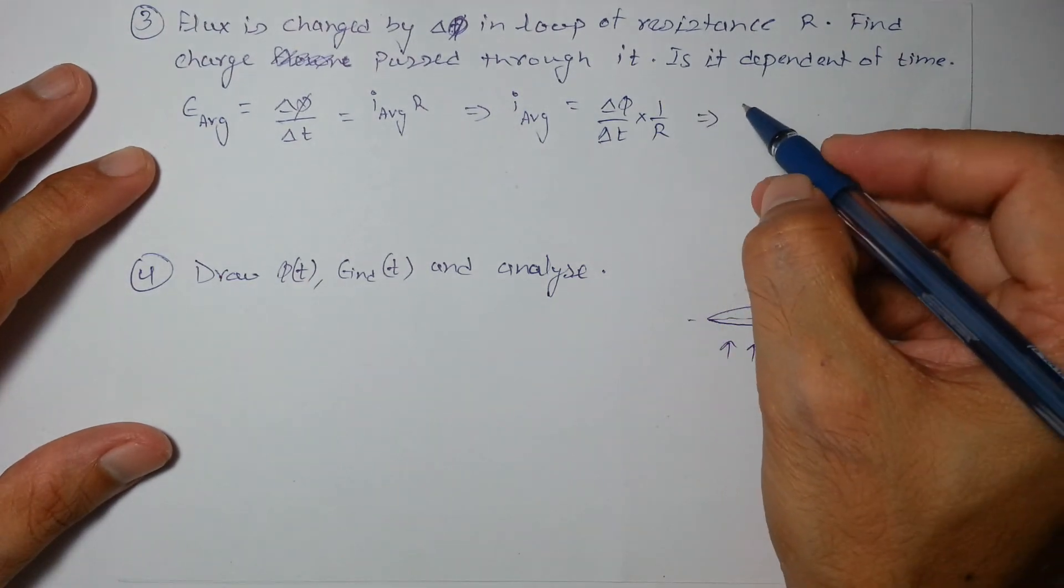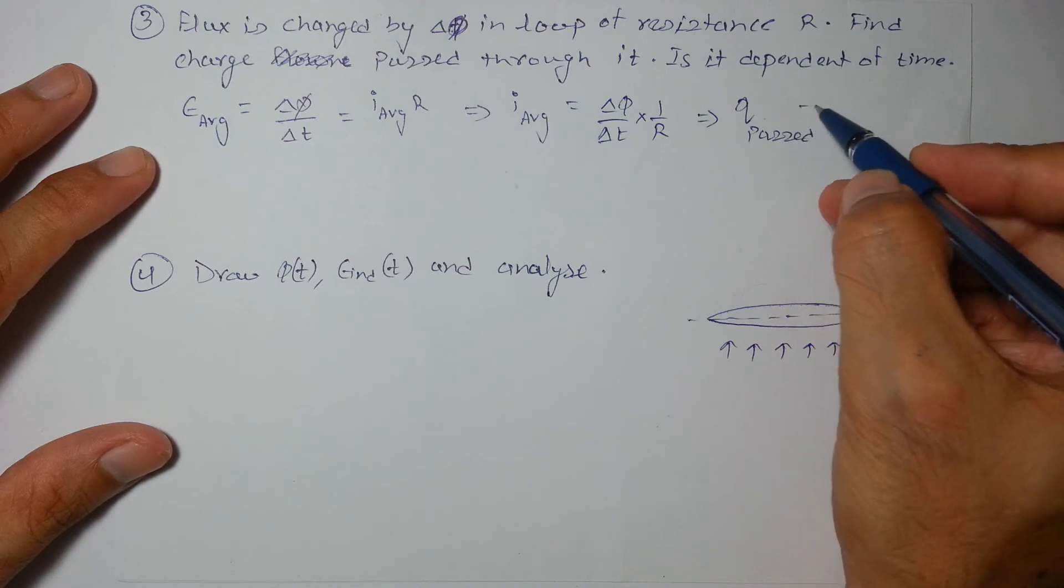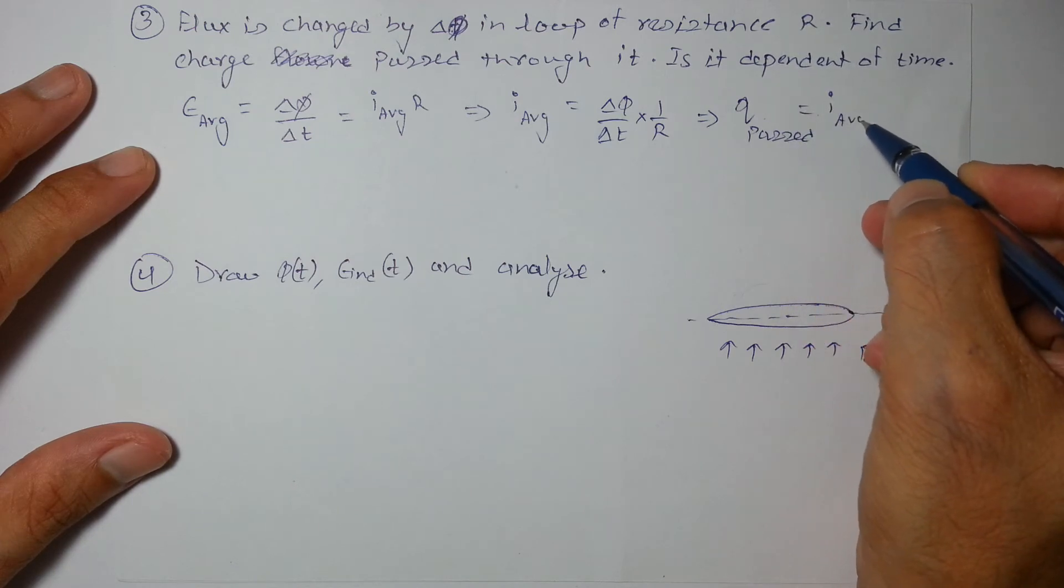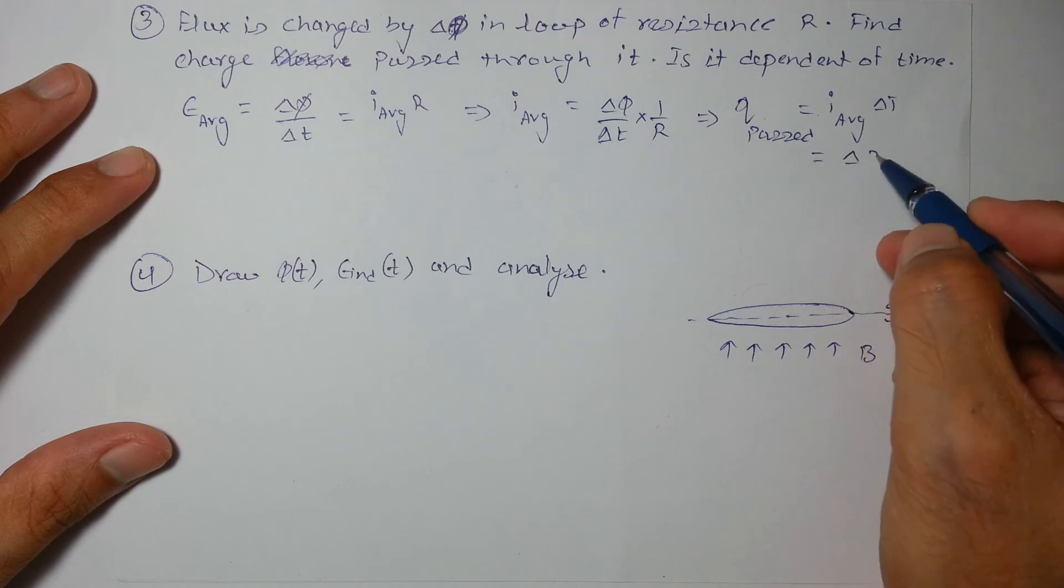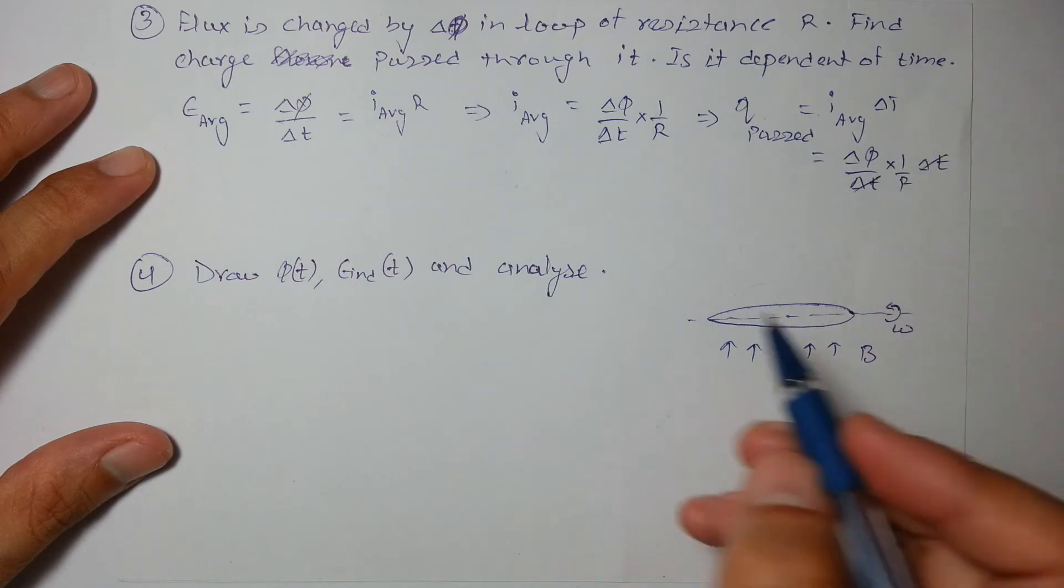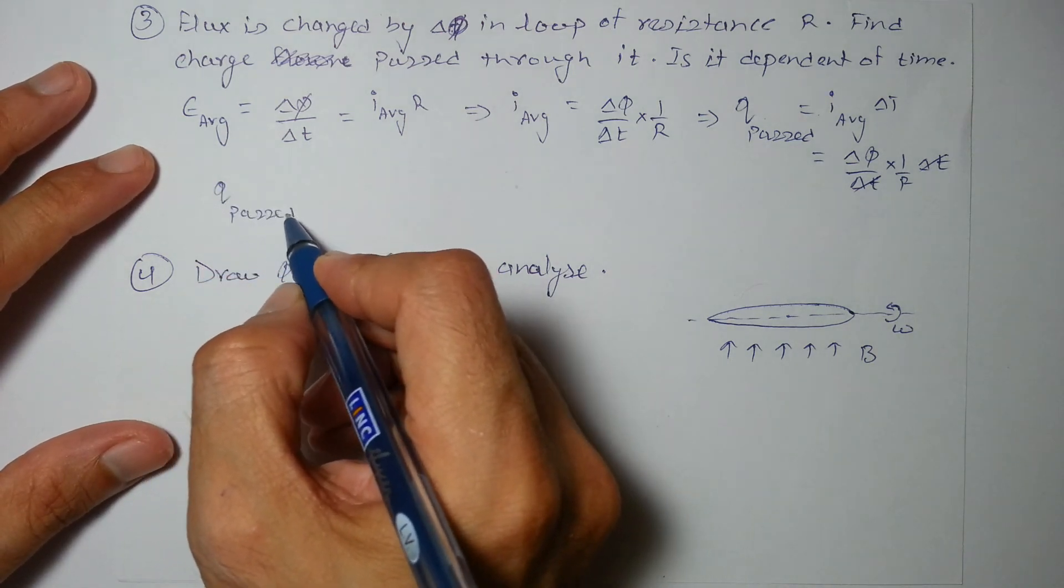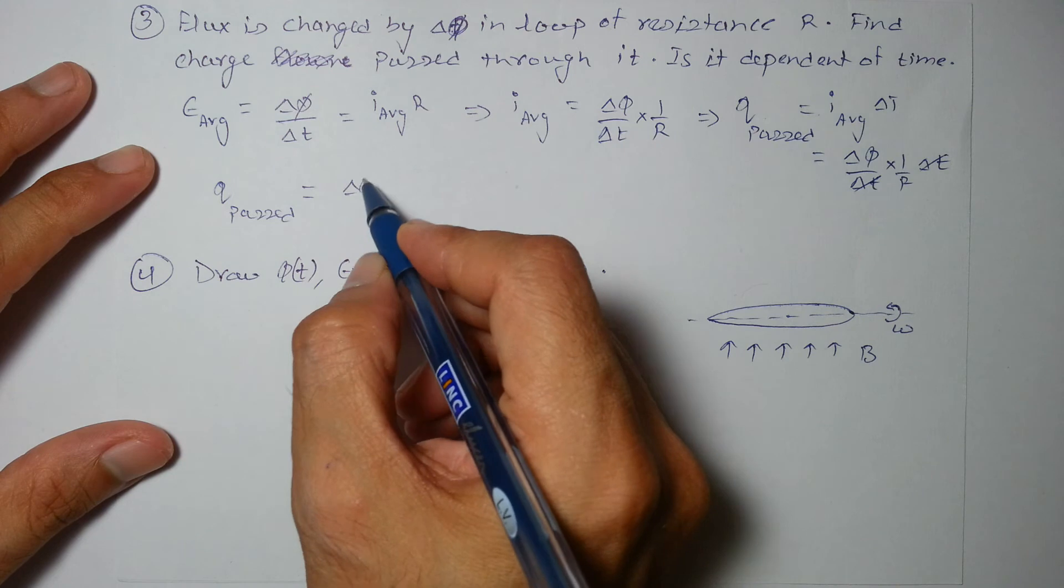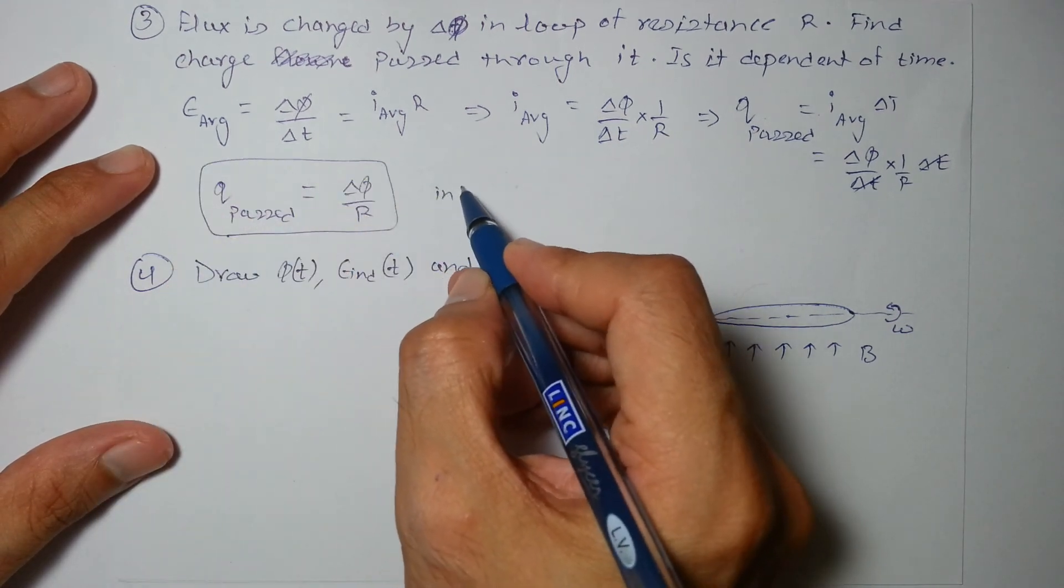And the charge passed Q passed can be written as I average into delta t. So it will be delta phi by delta t into 1 by r into delta t. So delta t will cancel each other. So we can say Q passed is simply delta phi by r and it is independent of time.